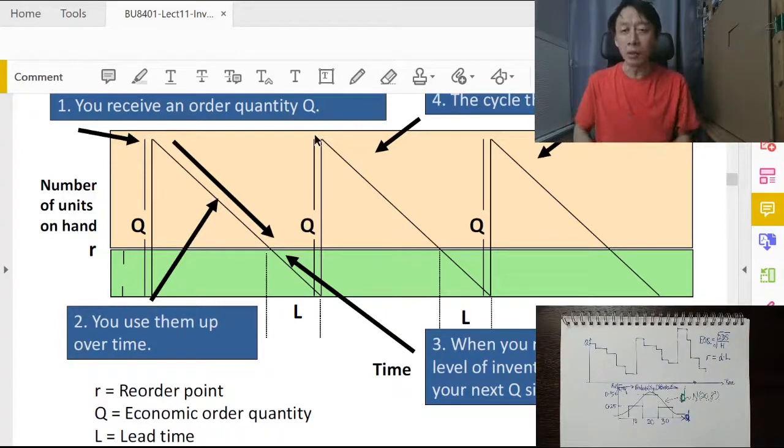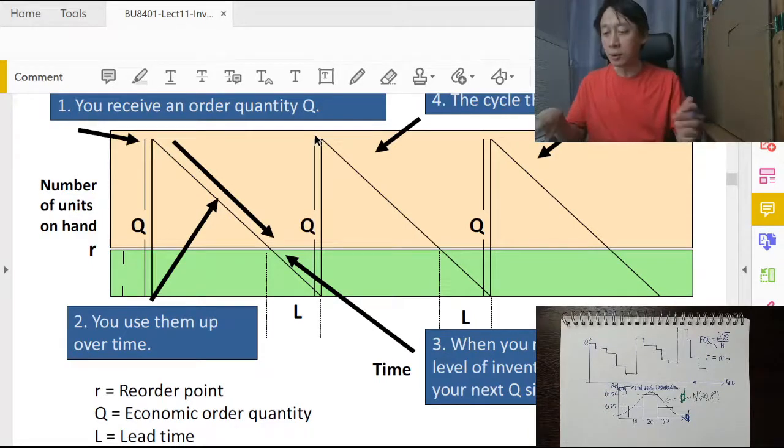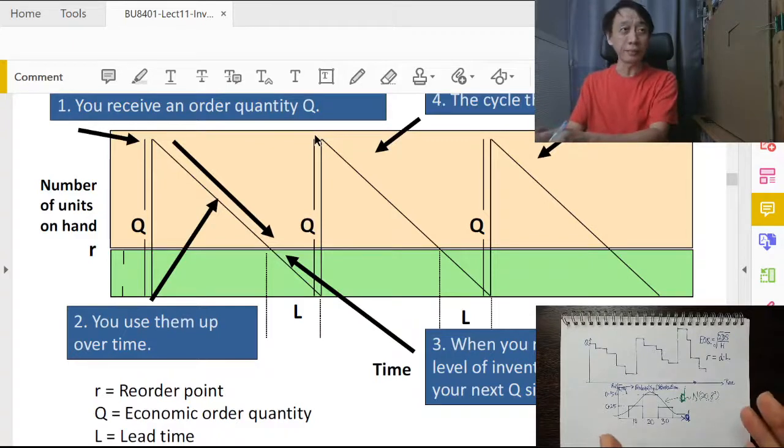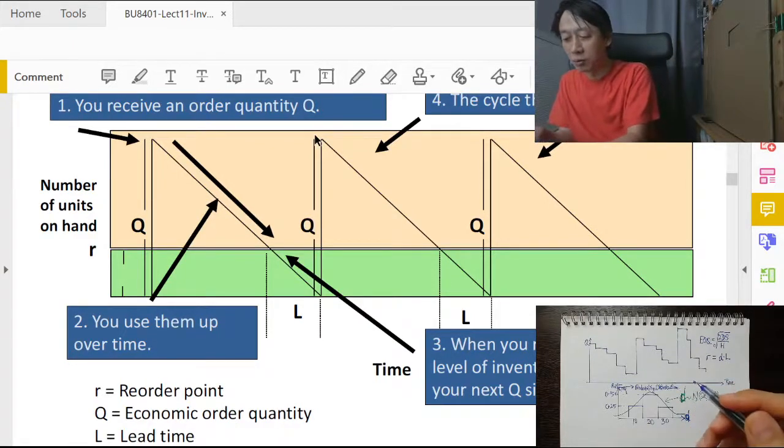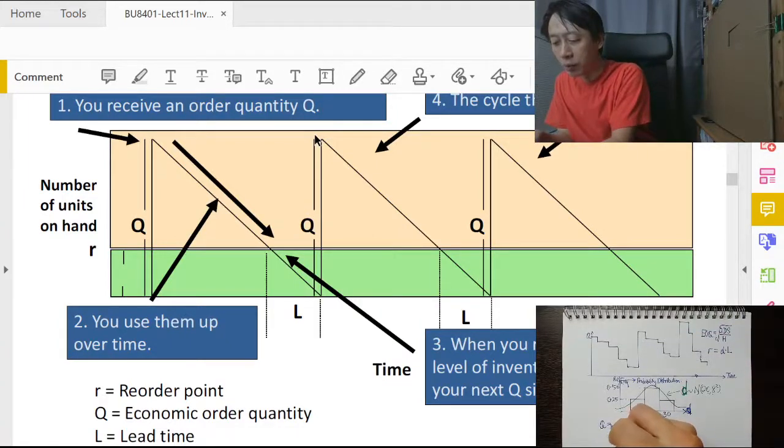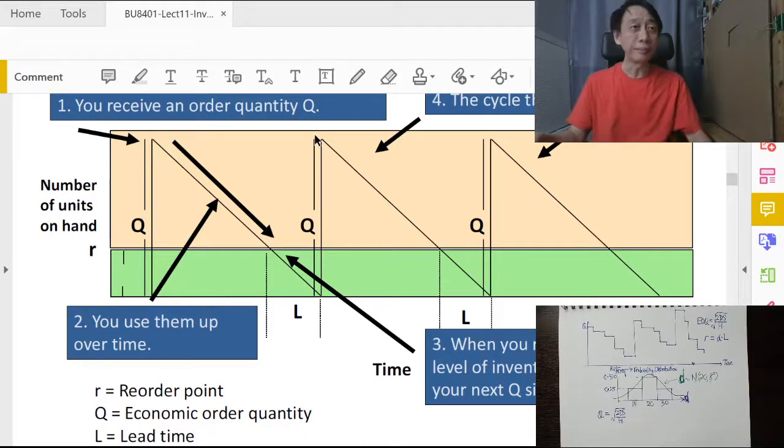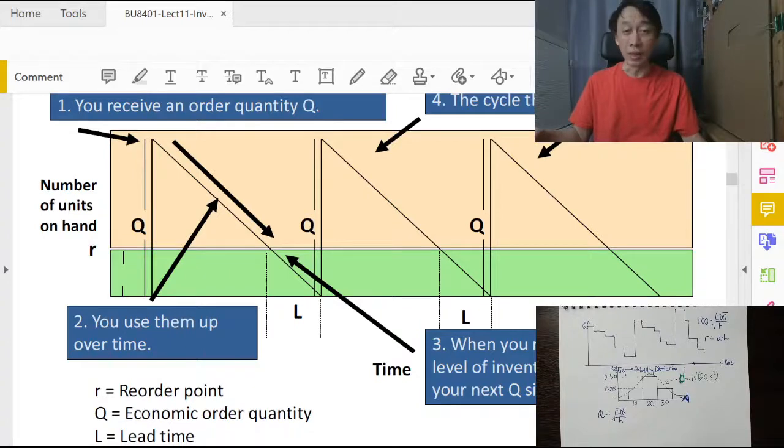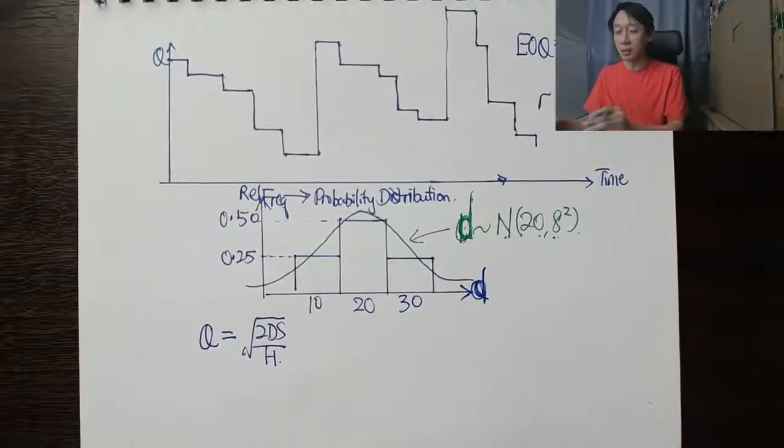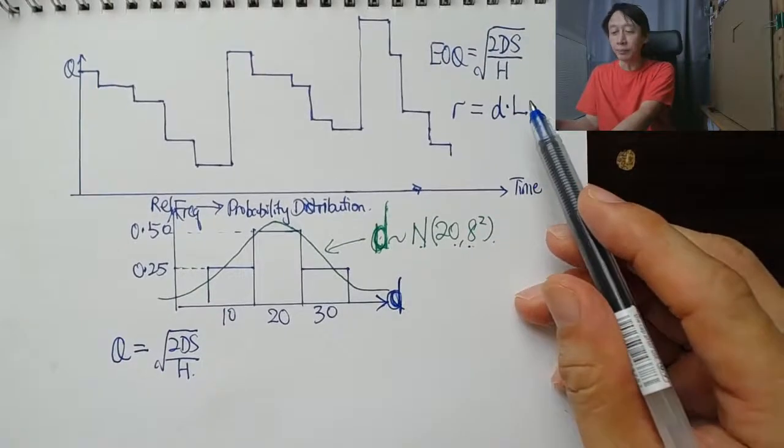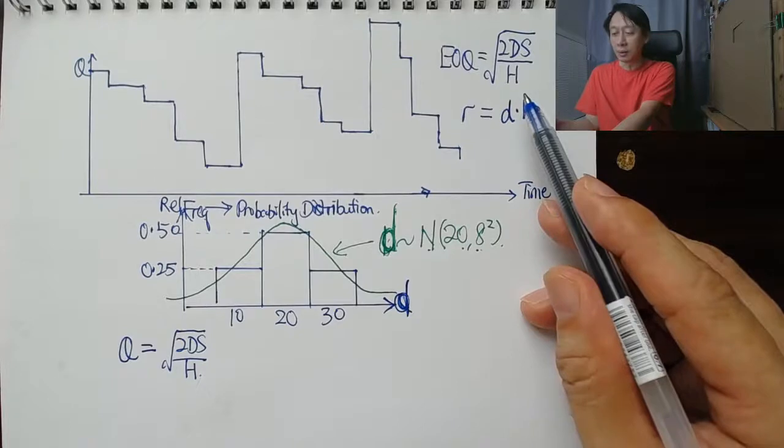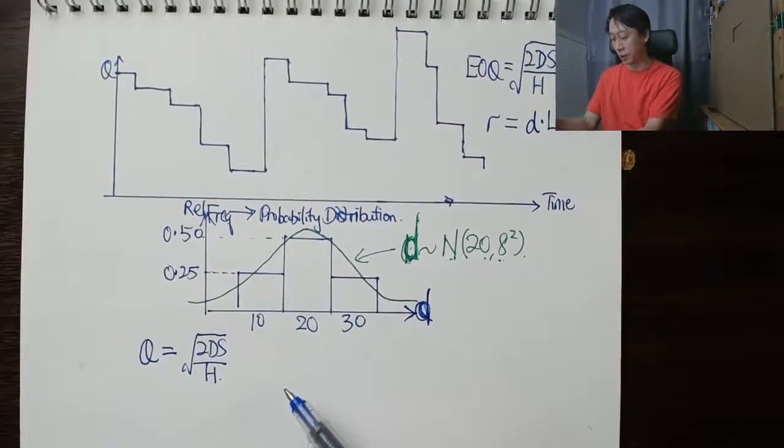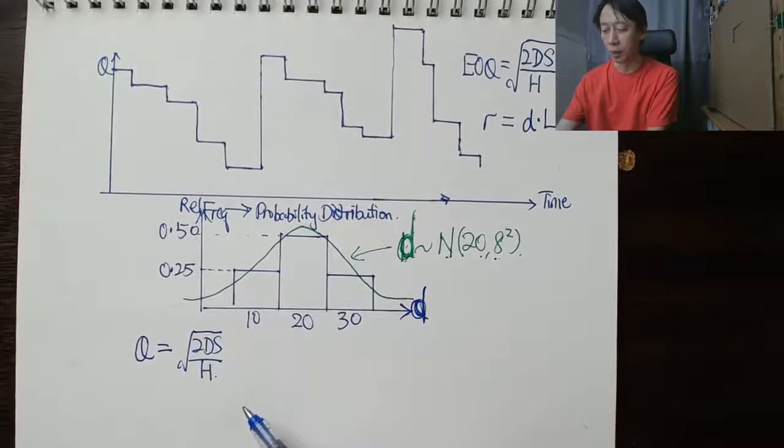So that much is clear. Now, why do we here refer to a constant demand? Because what we will advocate here in the dynamic demand case is that our order quantity will be Q, where we say it will be set to 2DS over H. So let me say again that our order quantity for the dynamic demand case will be Q equals to square root of 2DS over H. In other words, it is exactly taken from the EOQ formula. Okay. Now, why is that the case? Well, this is the part that we need to figure out because answer is already here. The answer is already here with the EOQ formula. We just need to make sense out of it.